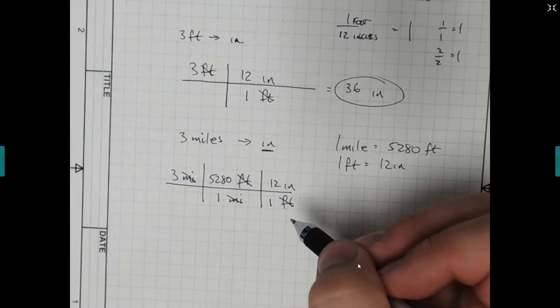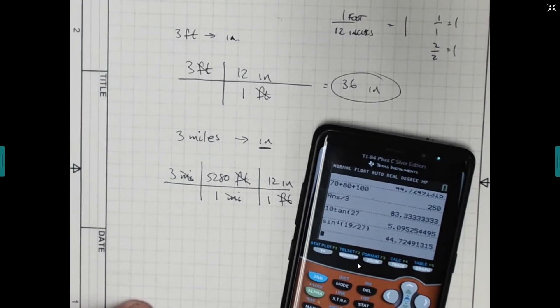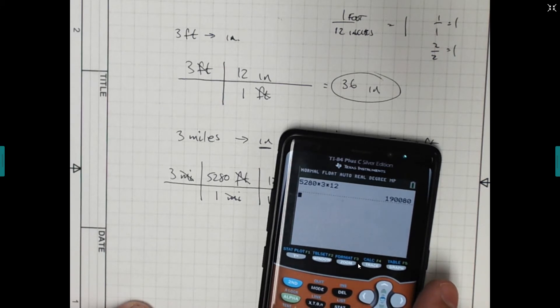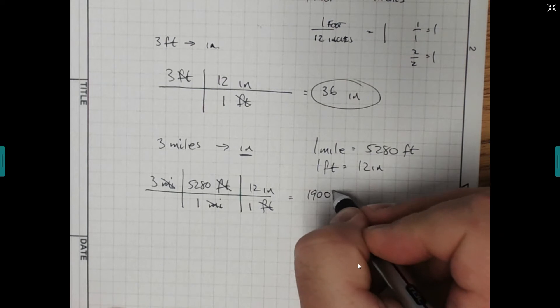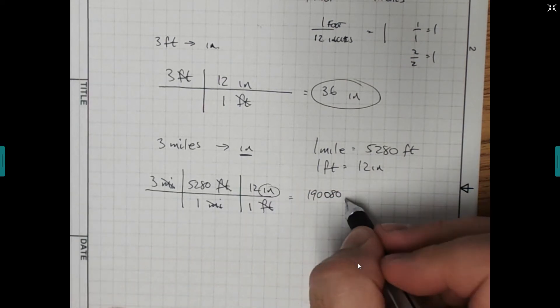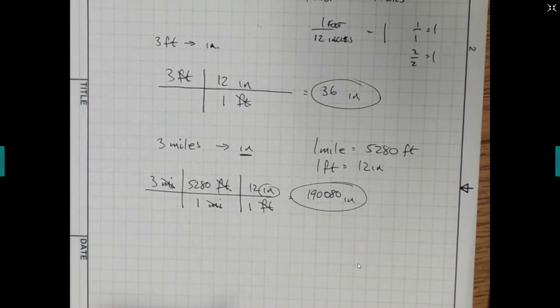And there are 12 inches in that 1 foot. And now from here, I kind of need my calculator for this one. I can't do all that one in my head. So if we look at our calculator, we have 5,280 times the 3 times the 12. So that's the top. We have 190,080. Then on the bottom, it's all just ones. And what did we end up with? All we have left over is inches, which is what we wanted.